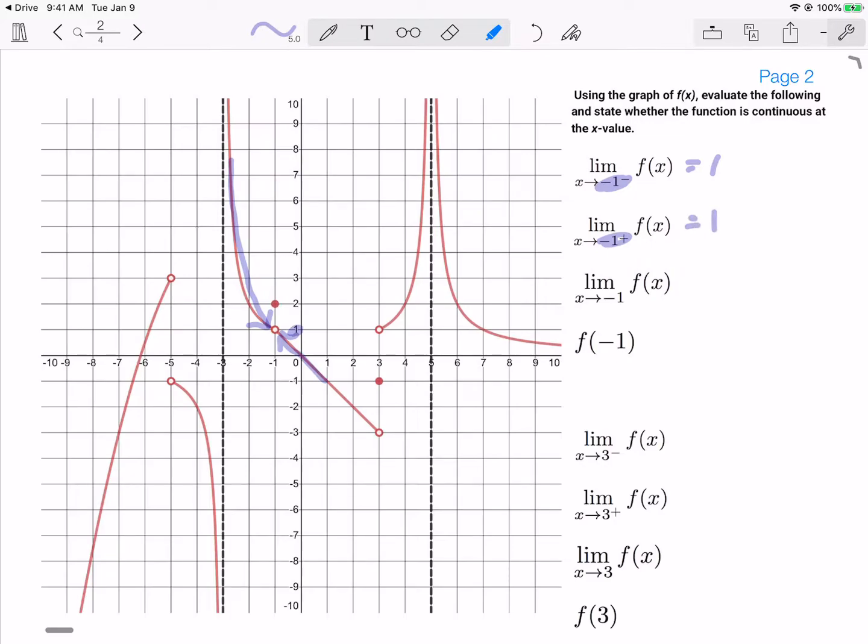Because those limits from the left and the right are the same, my limit as I approach negative 1 is 1. But the function's value is up here where it's filled in, and that's a y value of 2. So I would need to state that this function is not continuous at x equals negative 1 because the limit does not equal the function's value.